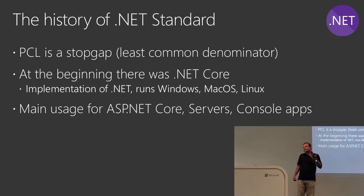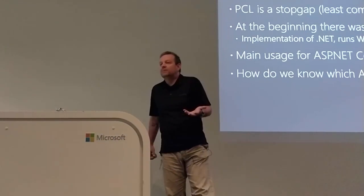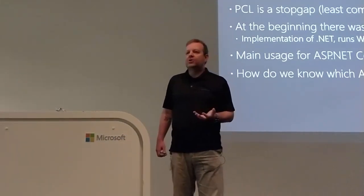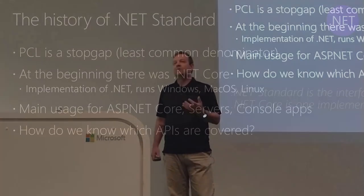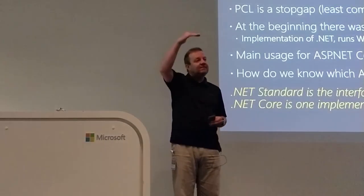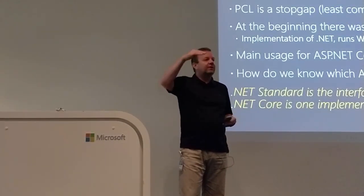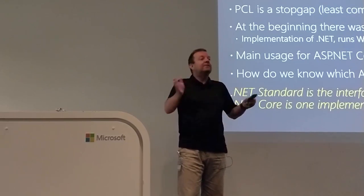We now have this small implementation running on all those platforms, but we still have the same problem: how do we know which API is going to run on what? If I have a .NET Core 1.0 application, can I use HTTPClient, for example? In order to answer this question — which was really difficult with Portable Class Libraries — Microsoft decided to create a specification called .NET Standard. .NET Standard is the contract, and .NET Core is one of the possible implementations. So if .NET Standard 1.3 defines a list of APIs, and .NET Core 1.3 implements .NET Standard 1.3, then you know exactly what you have.